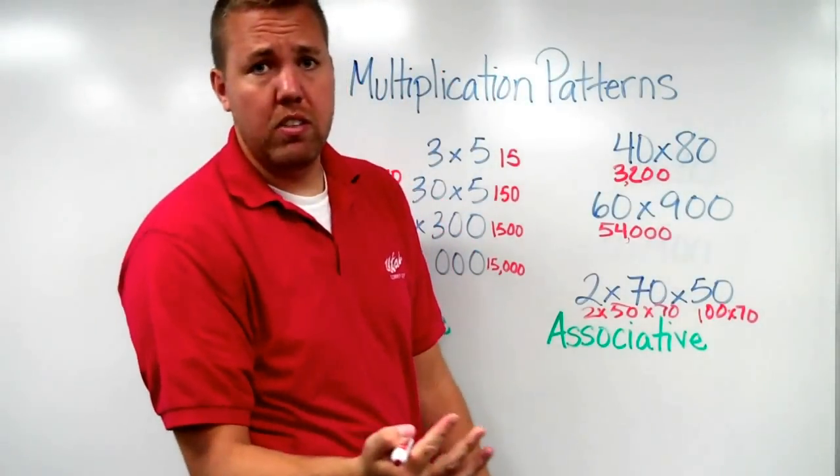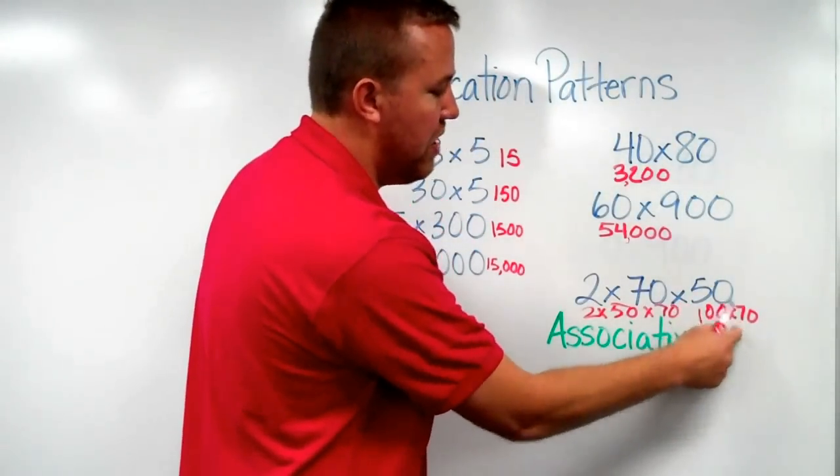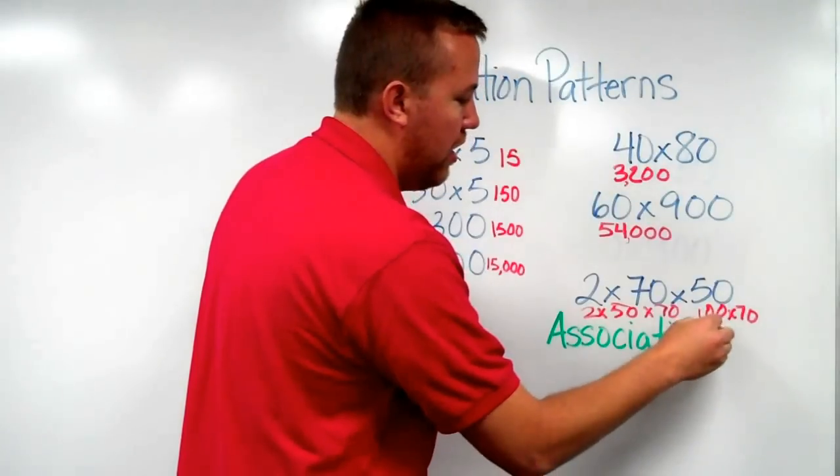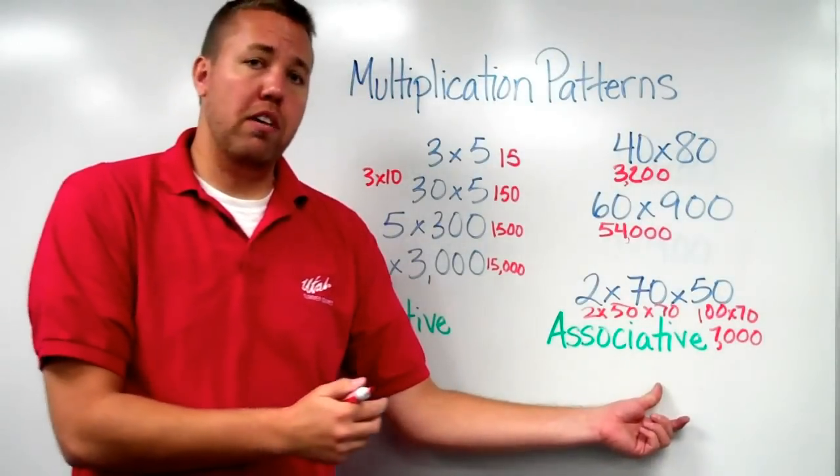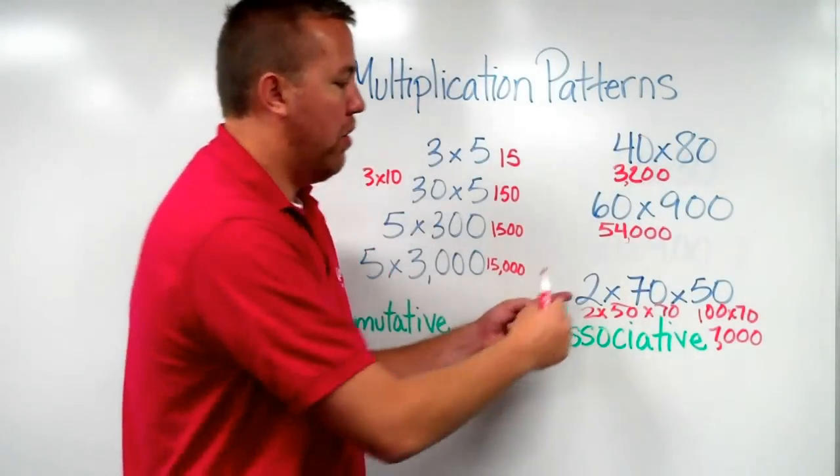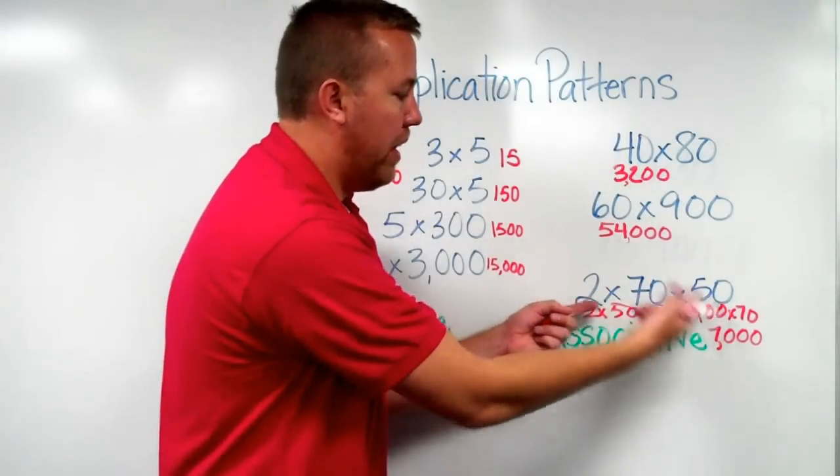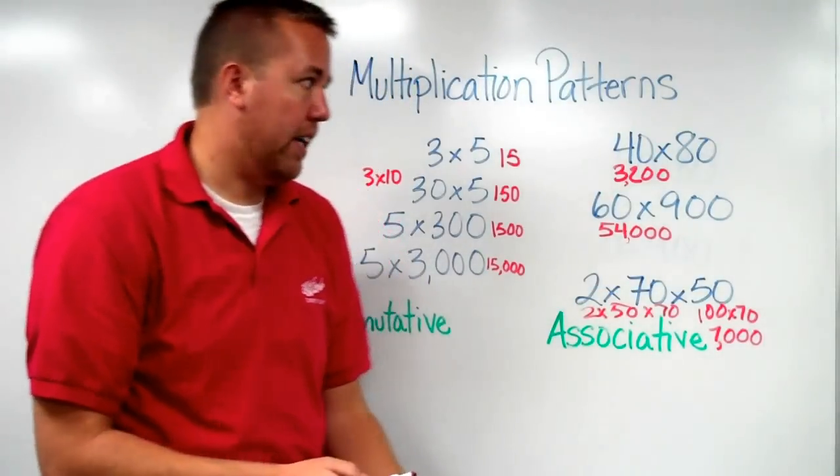with my new skills knowing the patterns, 1 times 7 equals 7, and there are 1, 2, 3 zeros. So that's the associative property of multiplication, stating that we don't have to do them in the same order. We can switch around the order of the factors.